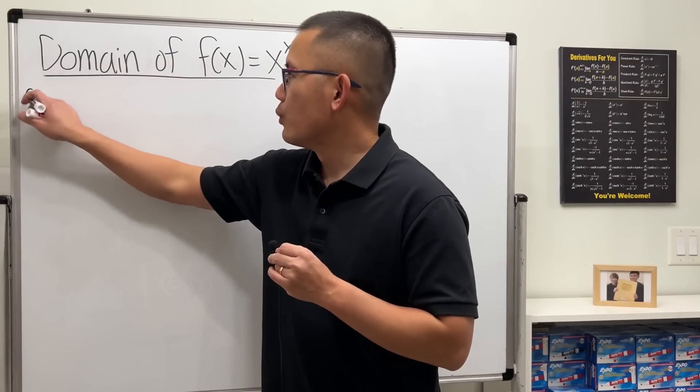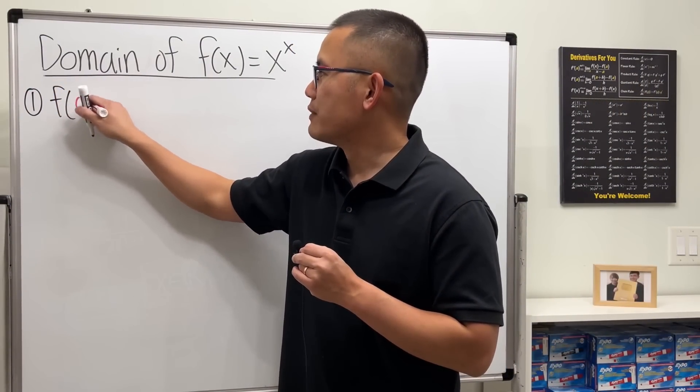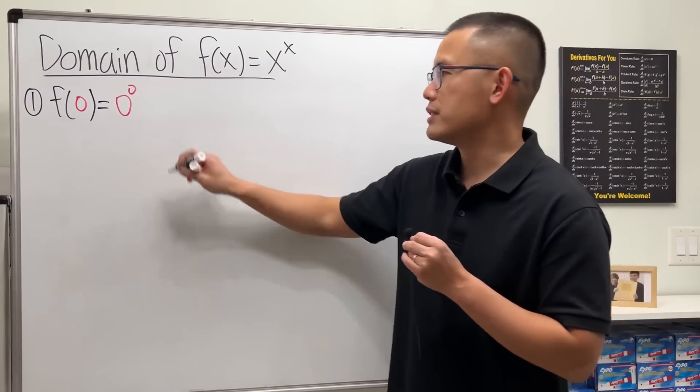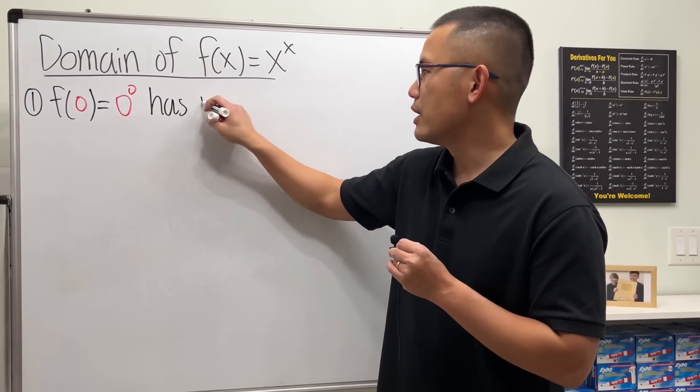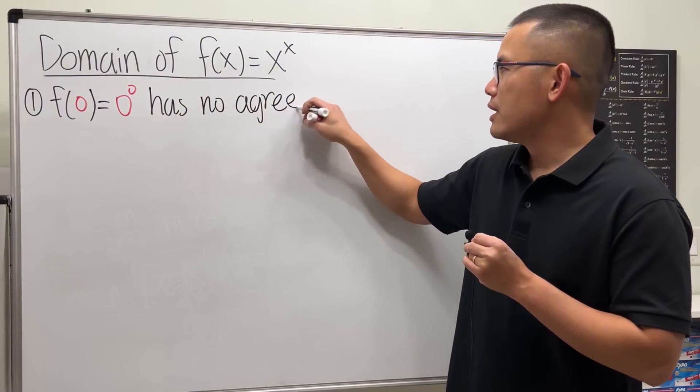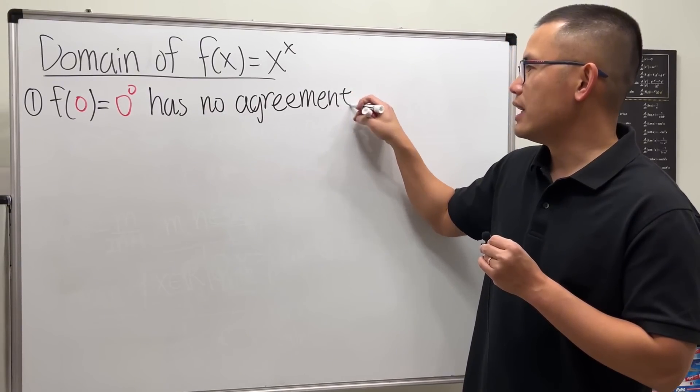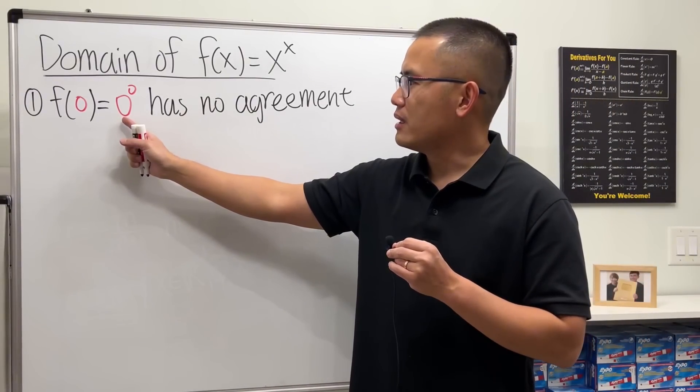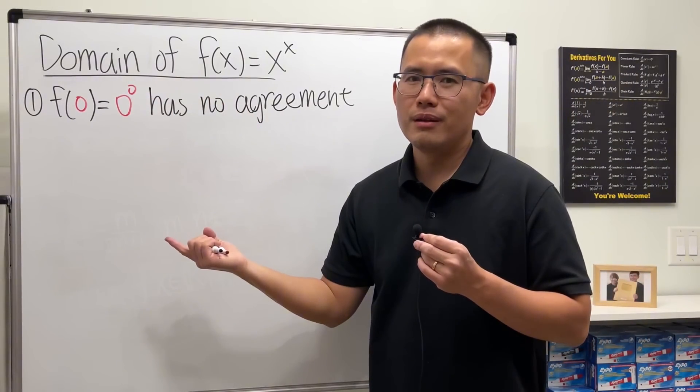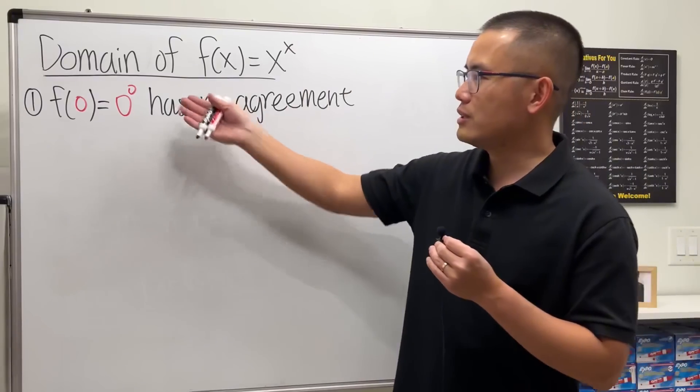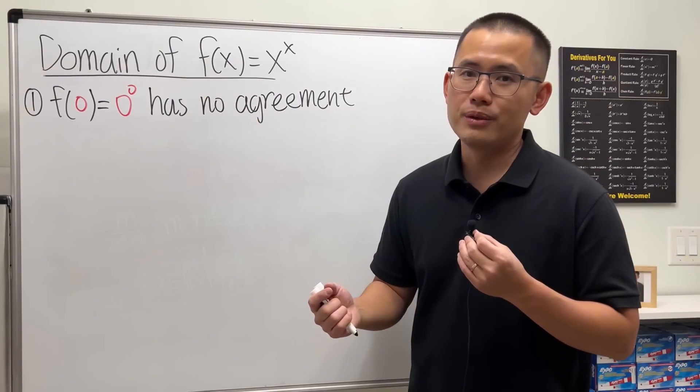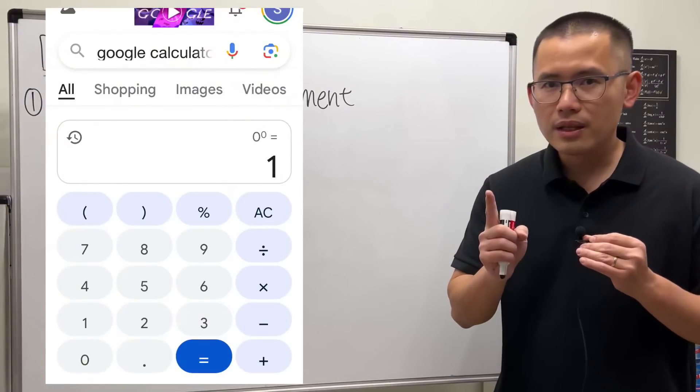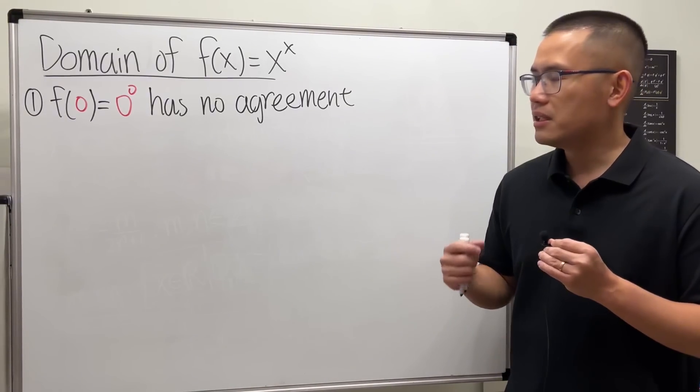For x to the x power, one thing I want to mention: f(0) gives us zero to the zero, and this is perhaps the worst thing ever because it has no agreement. In my opinion, this is worse than having no real value. Some people tell you this equals one, but others say 0^0 is undefined. For example, Google calculator says 0^0 equals 1, but Wolfram Alpha says 0^0 is undefined.